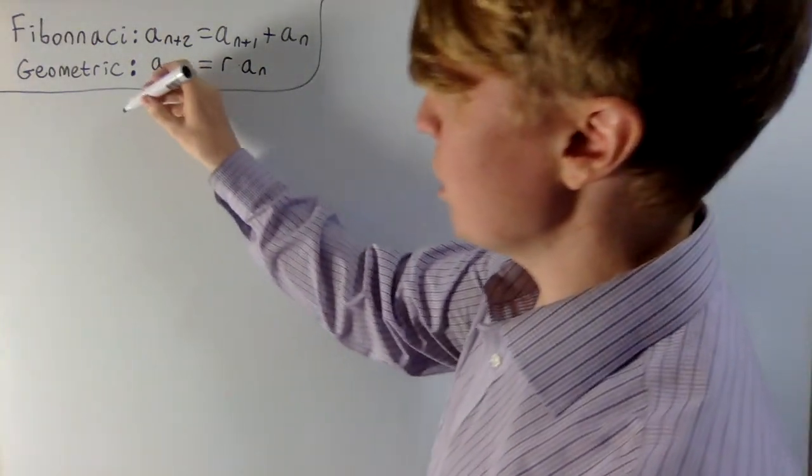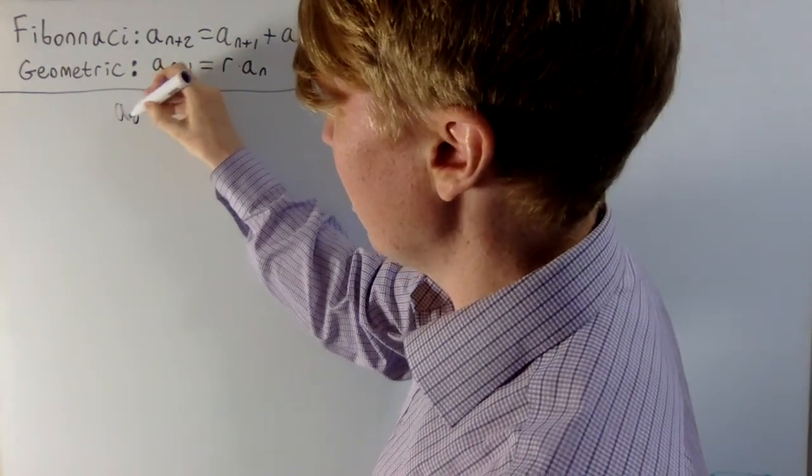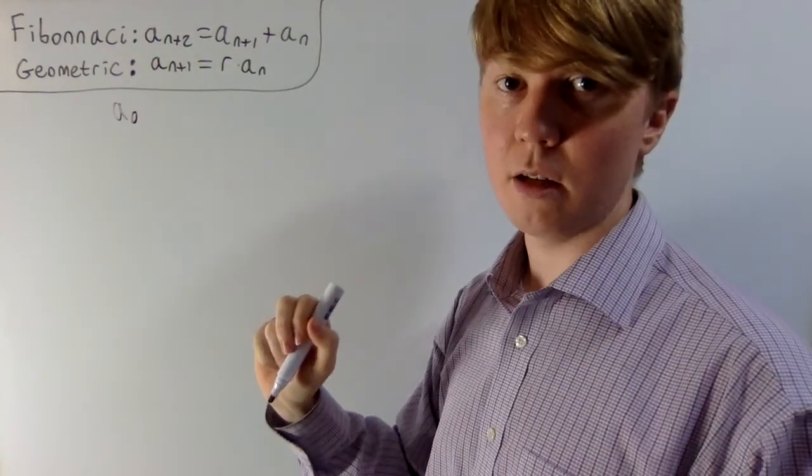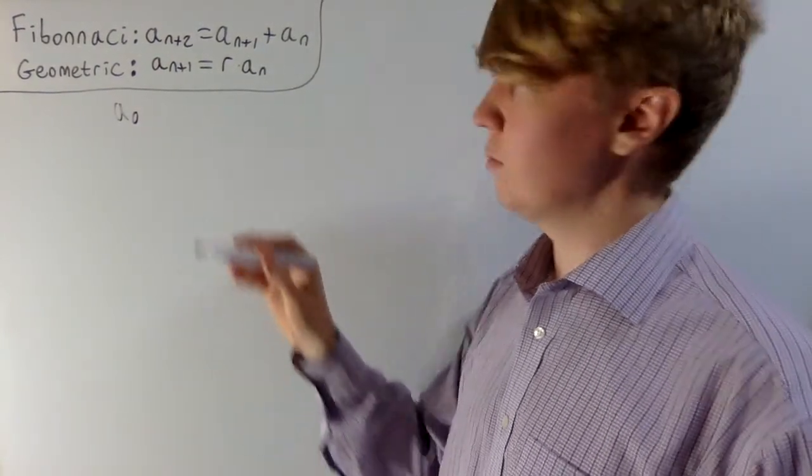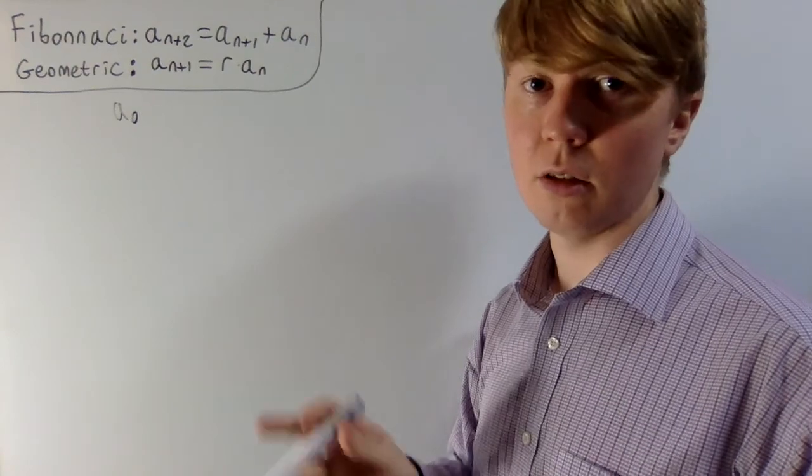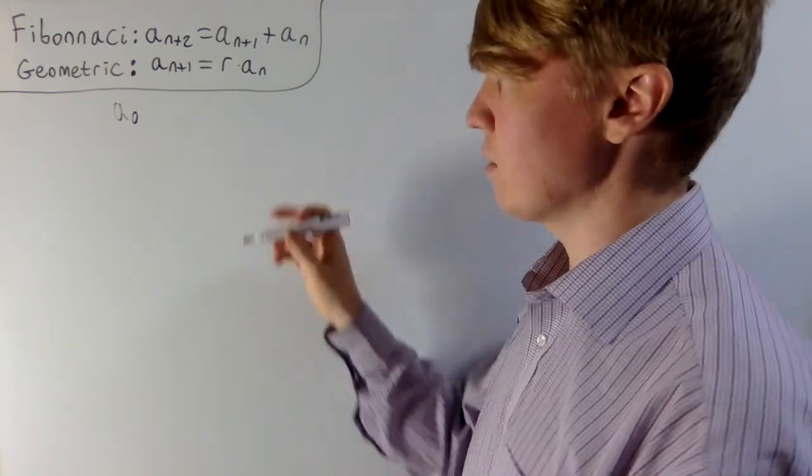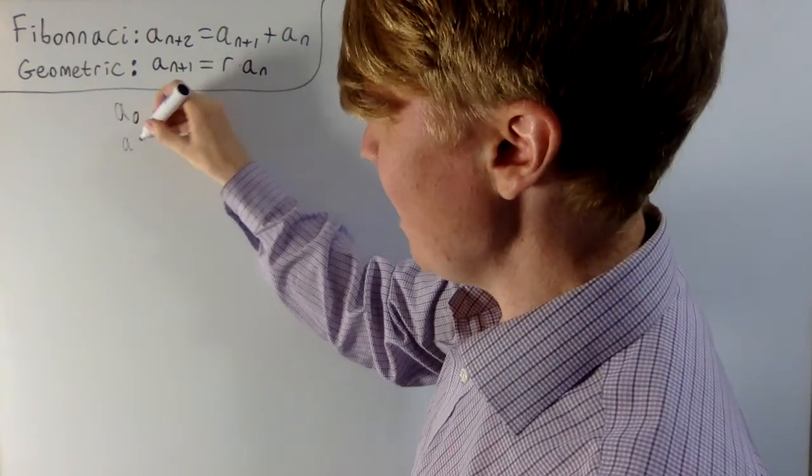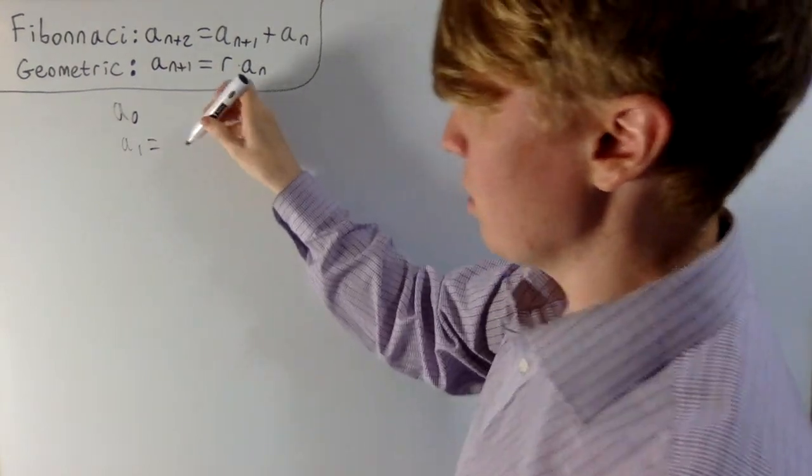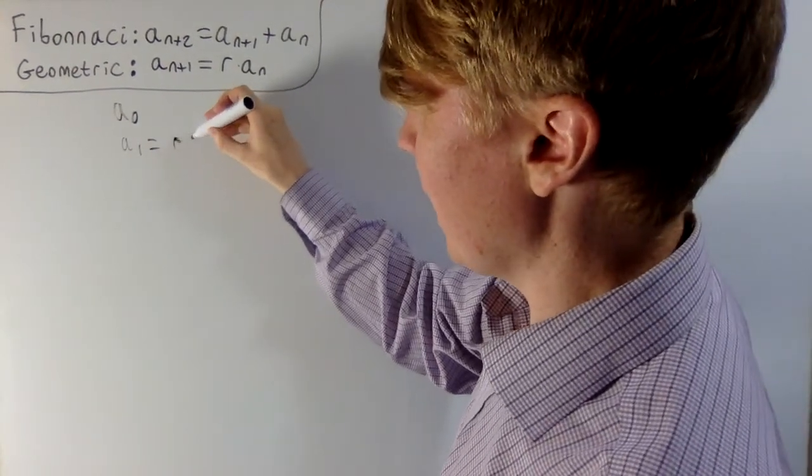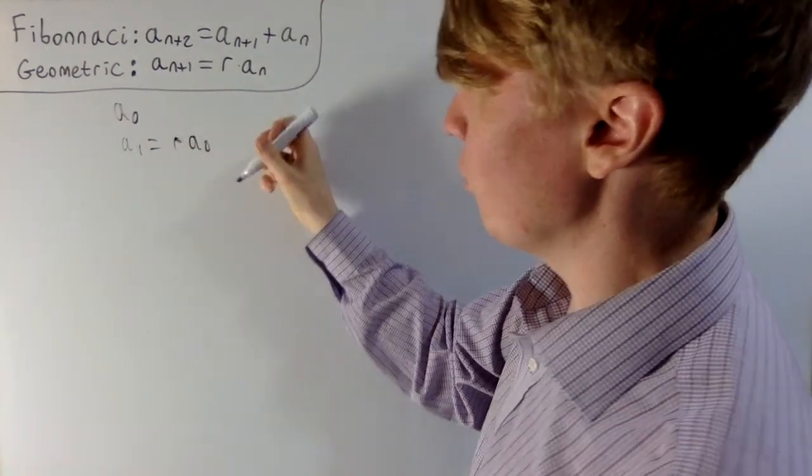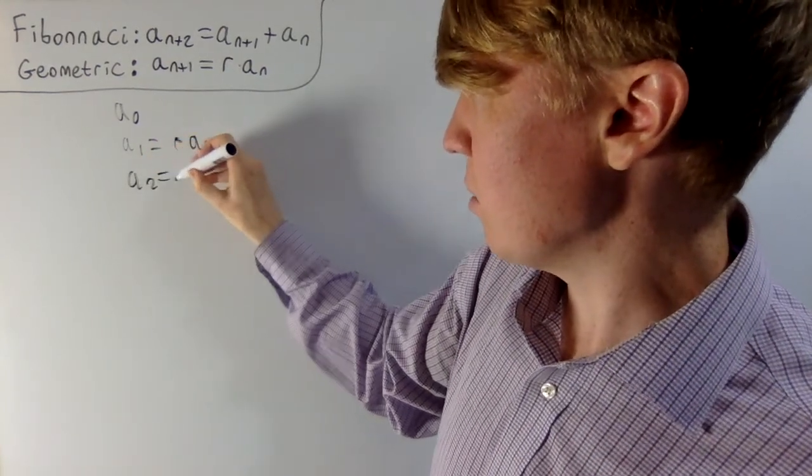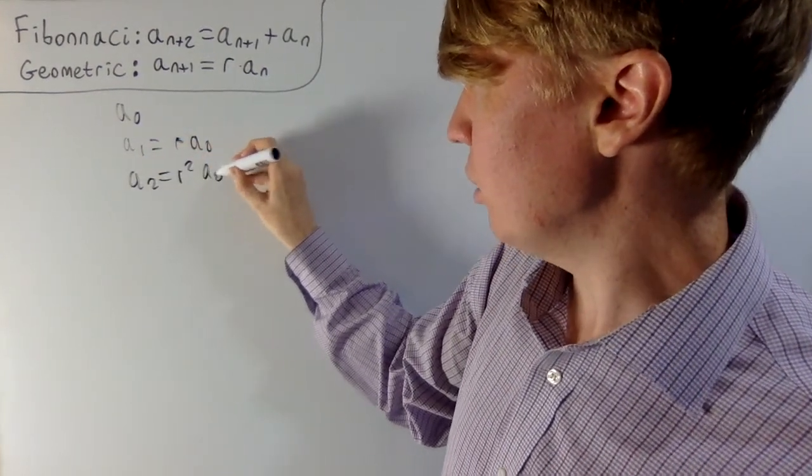Let's imagine we start with a0, and we say a0 isn't 0, because if a0 is 0, you're stuck as this 0, 0, 0, 0 sequence. Then a1 has got to be equal to r multiplied by a0, where r is our common ratio. And then a2 has to be r squared a0.